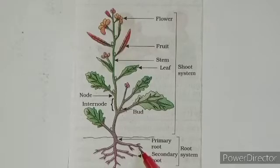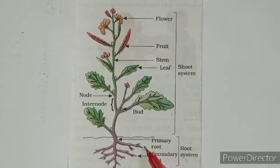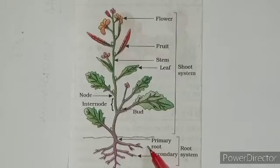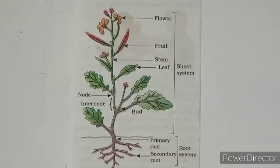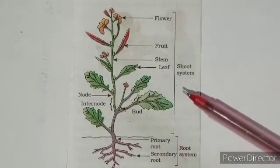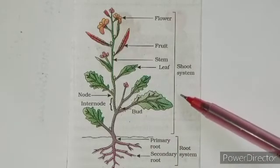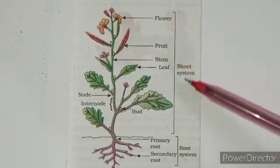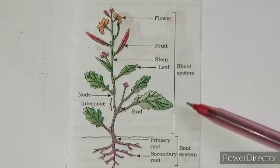Roots also absorb nutrients from the soil that the plant needs to grow and stay alive. Roots even store food for the plants — such as carrot, radish, and beetroot — for use in the future.